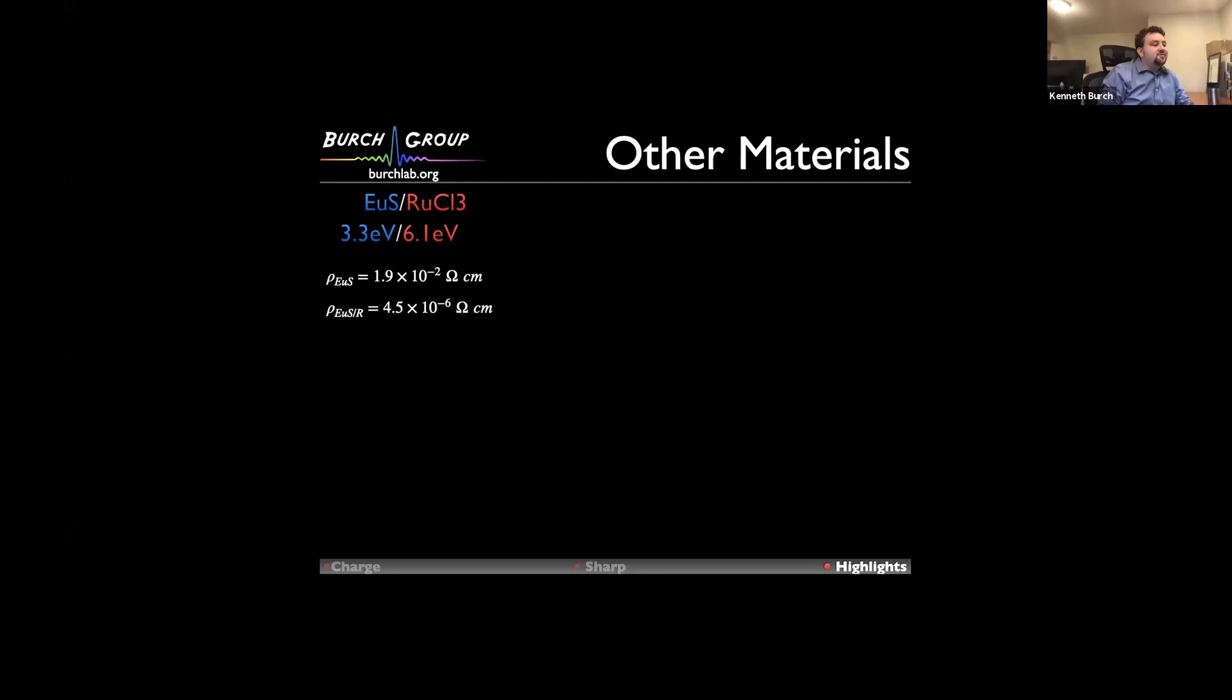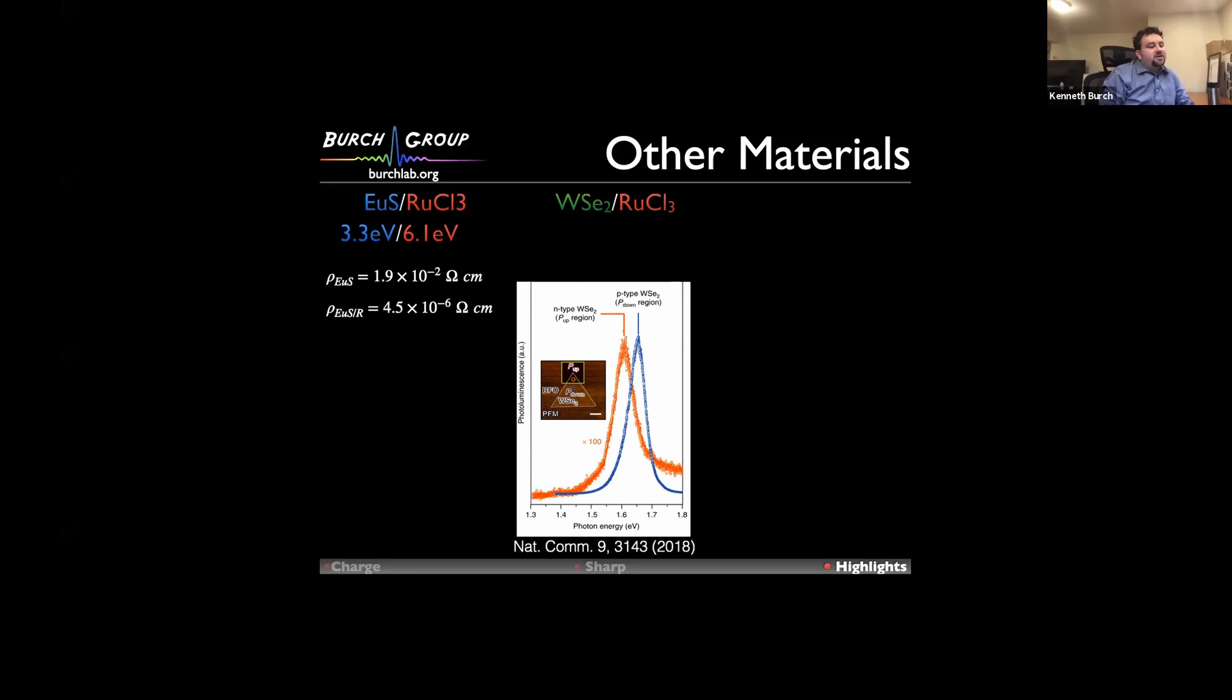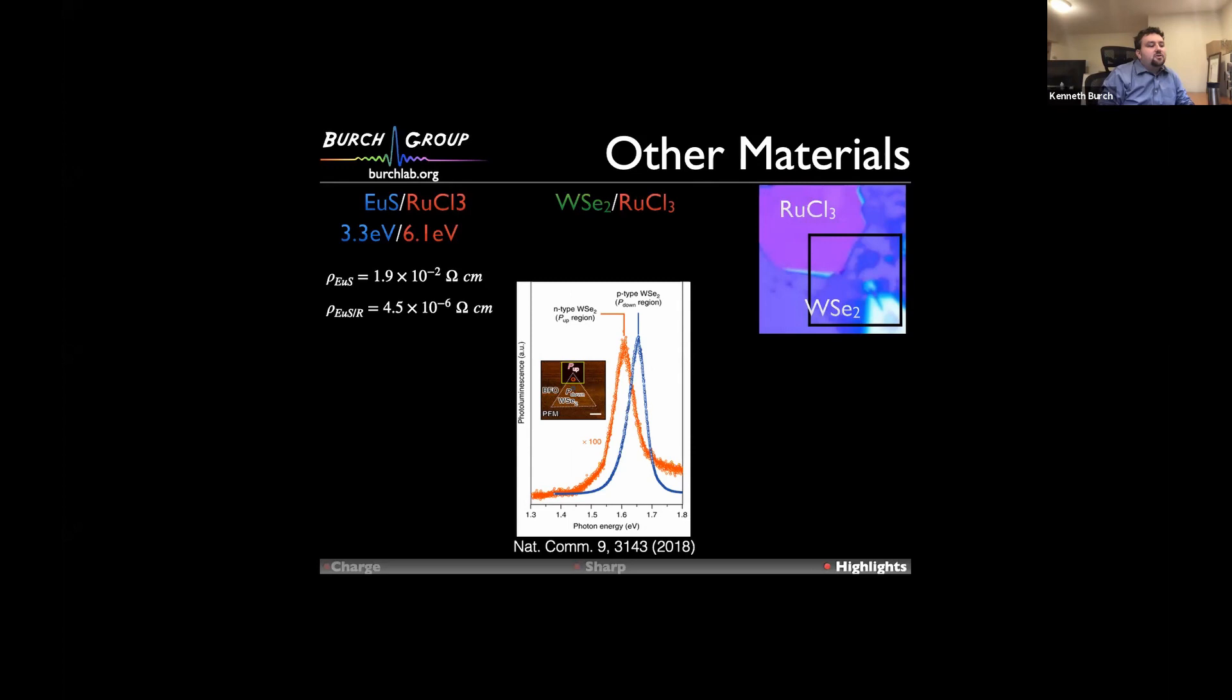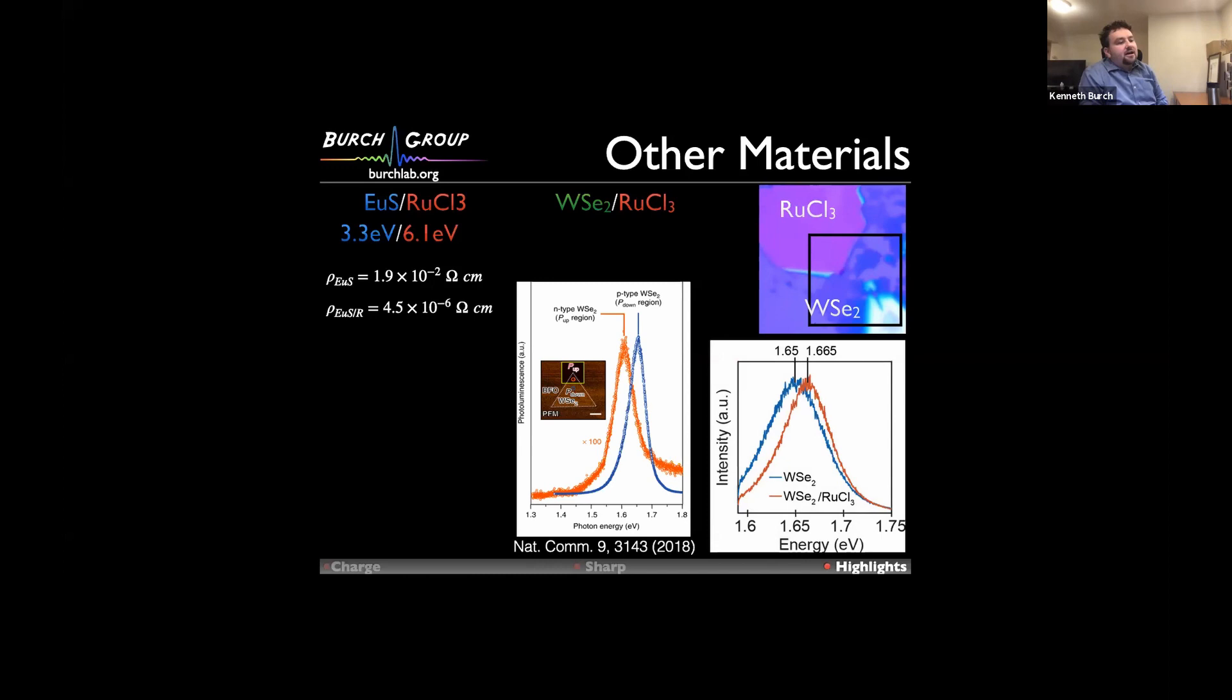We've also tried this with tungsten selenide. There, we wanted to try this contactless method using PL, where it's well known that the exciton peak will shift strongly when you go from, say, N-type to P-type, as shown by this work where they switched the doping by a ferroelectric layer underneath. We took CVD tungsten selenide grown by Young Jin Lee's group, and we just placed ruthenium chloride on top, and we did an imaging of the PL. Indeed, we find that when we measure PL on just the CVD tungsten selenide, we get roughly the intrinsic value. When it's on ruthenium chloride, it seems to shift consistent with being P-doped. I would say this is very preliminary, and we're now trying to work harder to really confirm that this is actually a charge transfer effect.